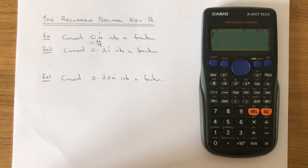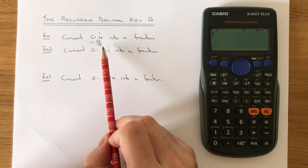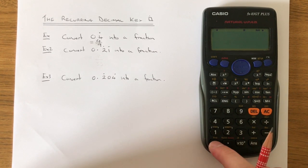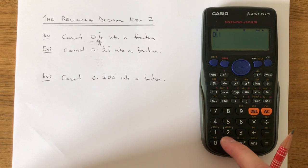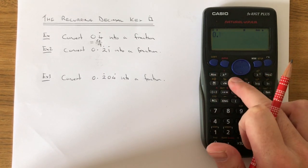Let's delete that one off. Let's do example 2. This time we've got 0.21 recurring, and it's the 2 and the 1 which is repeating. So again, press the 0 first, then the decimal point, then press shift x squared.